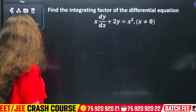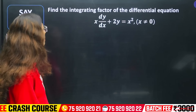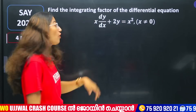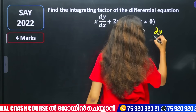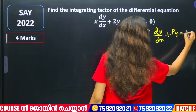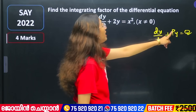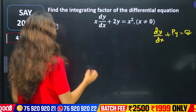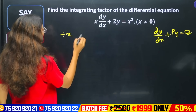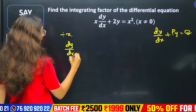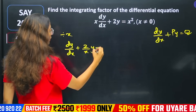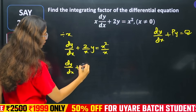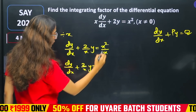Find the integrating factor of the differential equation: x·dy/dx + 2y = x². Our standard form is dy/dx + Py = Q. Dividing throughout by x gives: dy/dx + (2/x)·y = x. Comparing with the standard form, p = 2/x and q = x.